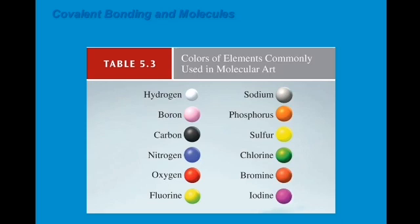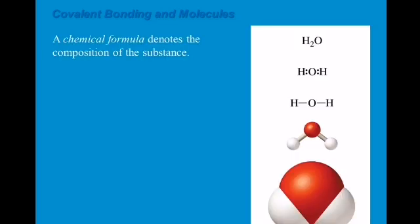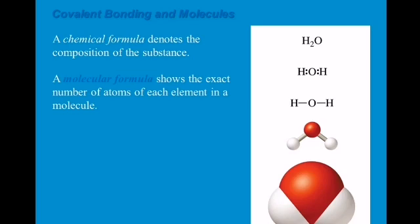When making a molecular structure, use those different colors as indicators of certain elements. A chemical formula denotes the composition of a substance and shows the ratio of elements in a compound. The molecular formula shows the exact number of atoms of each element in a molecule — for example, H2O is the molecular formula of water.